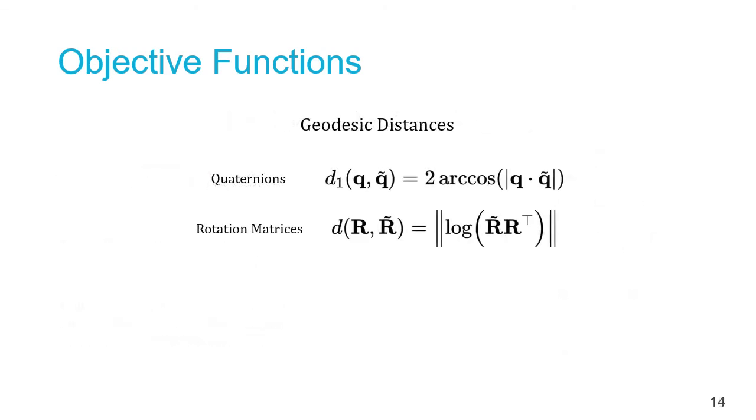We also use geodesic distance of rotation representation instead of the L1 or L2 norm, which allows us to better respect the topology space of these rotation representations and speeds up the beginning of our training.